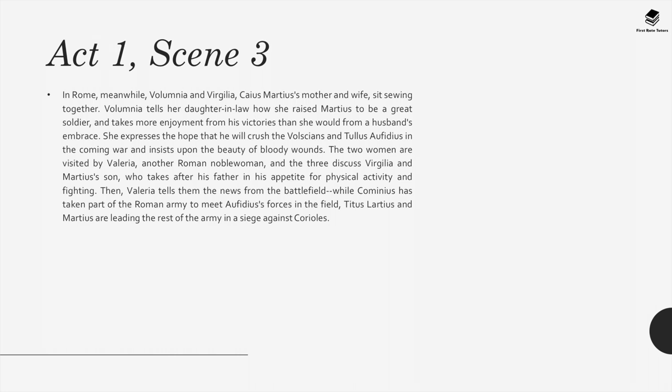Act 1, Scene 3: In Rome, Volumnia and Virgilia, Caius Martius's mother and wife respectively, sit sewing together. Volumnia tells her daughter-in-law how she raised Martius to be a great soldier, and takes more enjoyment from his victories than she would from her husband's embrace. She expresses hope that he will crush the Volscians and Tullus Aufidius in the coming war, and insists upon the beauty of bloody wounds. The two women are visited by Valeria, another Roman noblewoman, and the three discuss Virgilia and Martius's son, who takes after his father in his appetite for physical activity and fighting. Then Valeria tells them news from the battlefield: while Cominius has taken part of the Roman army to meet Aufidius's forces in the field, Titus Lartius and Martius are leading the rest of the army in a siege against Corioles.